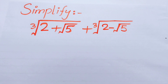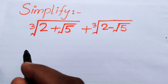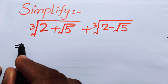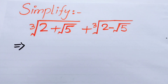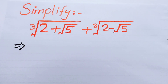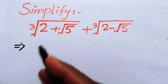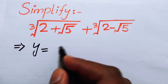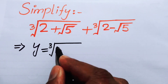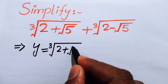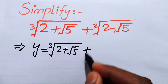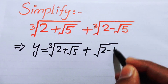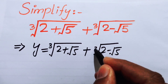We want to get the answer in a reducible form. The very first thing we are going to do is denote this question by a variable. We let y equal cube root of (2 plus square root of 5) plus cube root of (2 minus square root of 5).